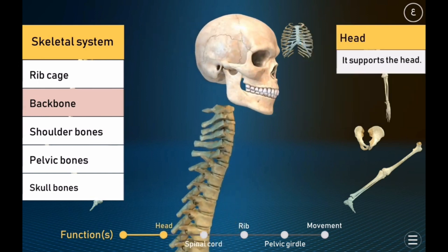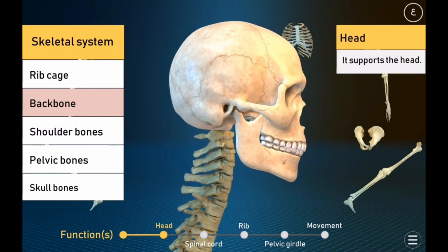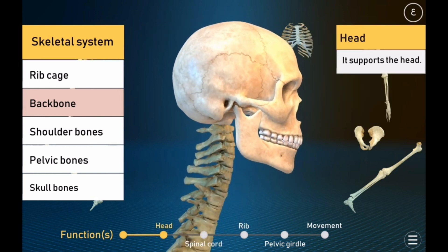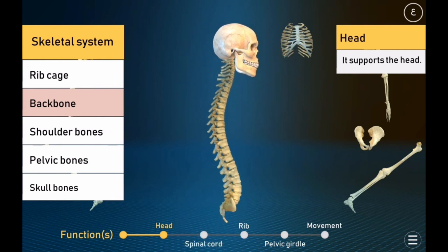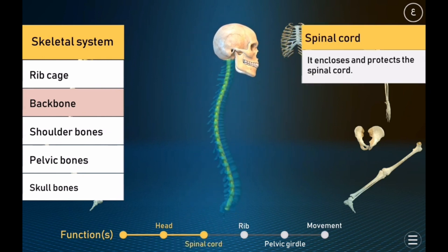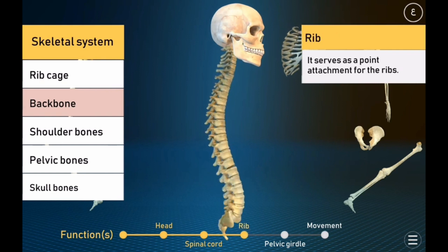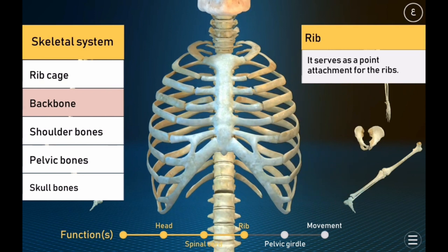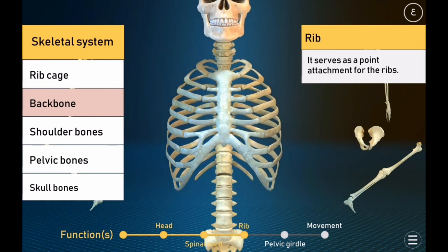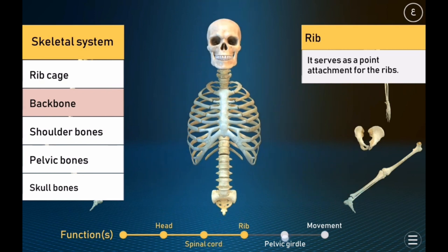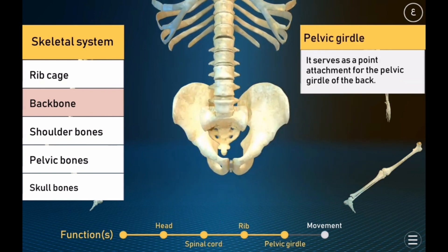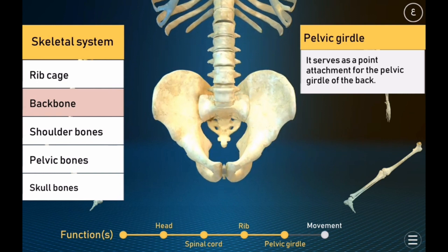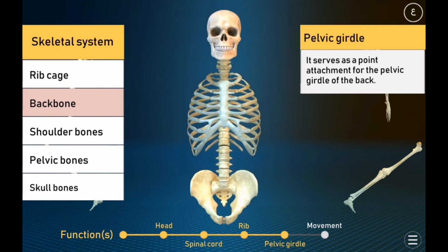The backbone supports the head. It encloses and protects the spinal cord. It serves as a point of attachment for the ribs, and also serves as a point of attachment for the pelvic girdle at the back.